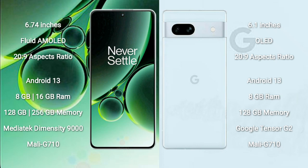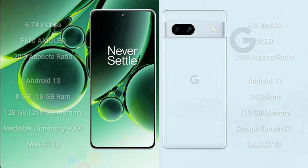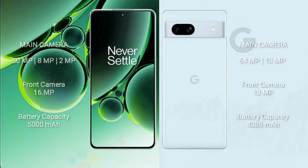Google Pixel 7a features the Google Tensor G2 processor and GPU Mali-G710. OnePlus Nord 3 has a triple camera setup: 50MP plus 8MP plus 2MP, and a 16MP front camera. Google Pixel 7a has a dual camera setup: 64MP plus 13MP, and a 13MP front camera.